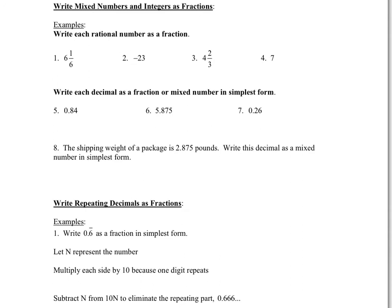Let's practice writing some mixed numbers and integers as fractions, which is ultimately proving that it's a rational number. So for example, 6 and 1 sixth — we want to write the rational number as a fraction.